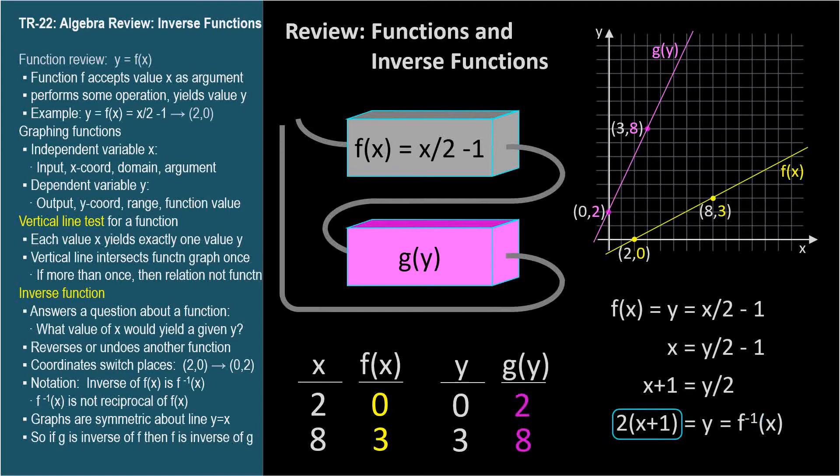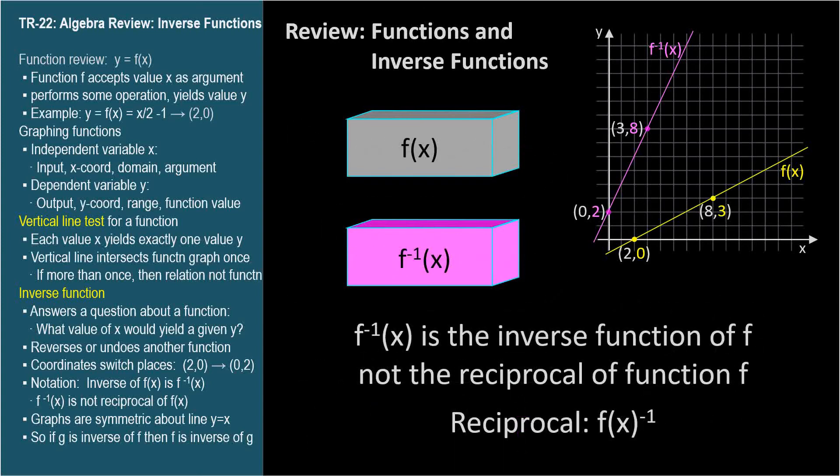The notation of inverse functions is a superscripted negative 1 between the function label and the argument. It looks like an exponent, or, to my British or Indian audience, an index, but it doesn't mean reciprocal. The symbology is a little unfortunate because it can be confusing. The reciprocal of a function would have its exponent after the argument.